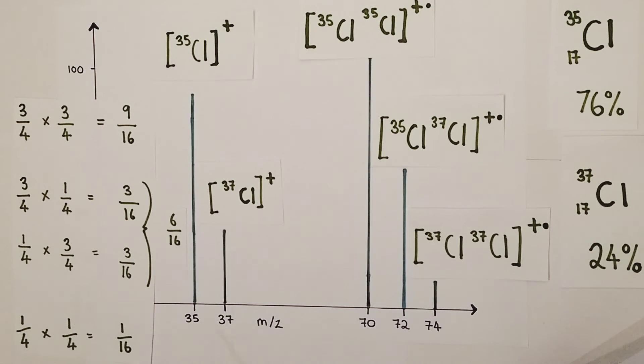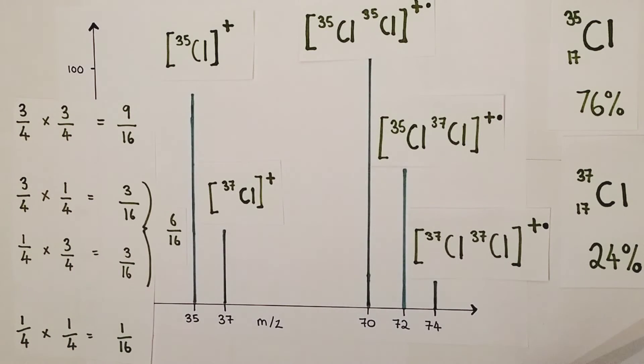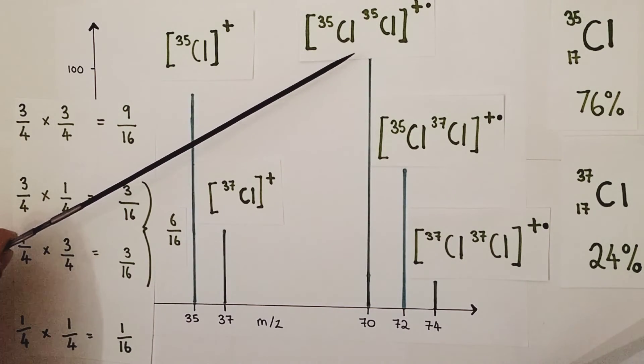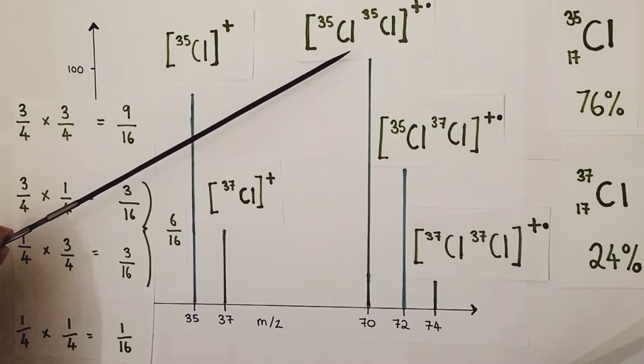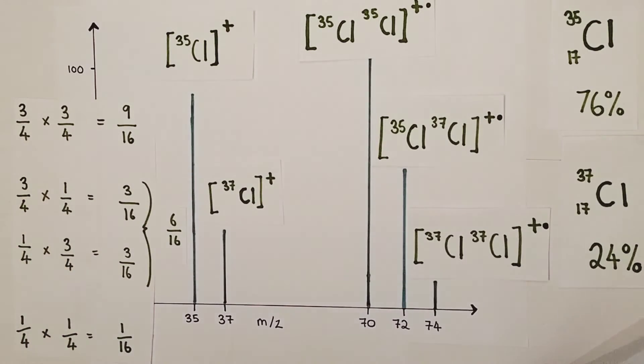And look at the size of our peaks in our mass spectrum - a 9 to 6 to 1 ratio. So again the probability of finding these isotopes in nature is entirely consistent with the size and height of the peaks produced by our mass spectrum of actual chlorine molecules found in nature. So mass spectrometry provides the data that allows us to come up with these isotopic abundances and probabilities of finding various isotopes for both individual atoms and even for molecules.